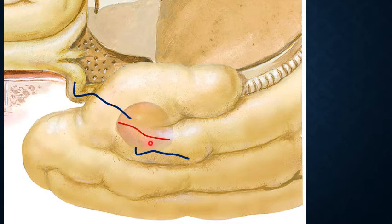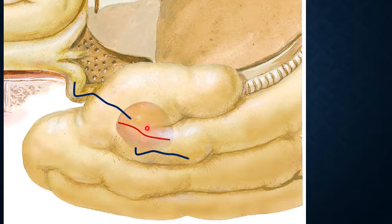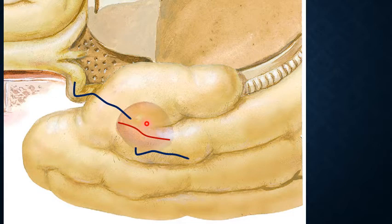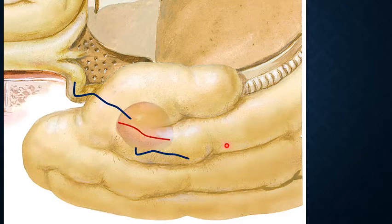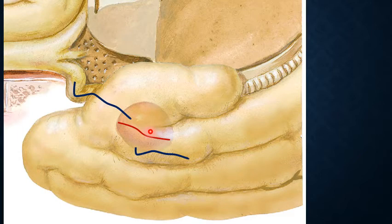The right and left amygdaloid bodies communicate with each other through interneuronal communications. In addition, they are connected by commissural fibers through the anterior commissure, as discussed in the white matter of the cerebrum. The chief output channels of the amygdala are conveyed by the stria terminalis and the ventral amygdalofugal fibers.